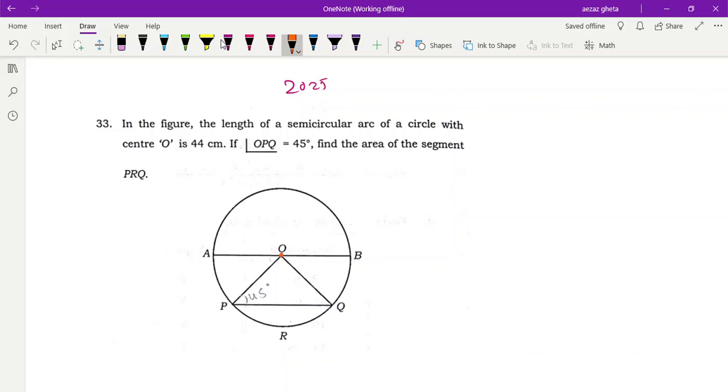Let's see the question. In the figure, the length of semicircular arc of a circle with center O is 44.